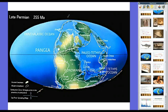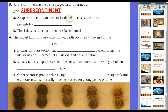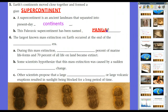By the end of the Permian Period, Earth's continents moved close together and formed a giant supercontinent. A supercontinent is an ancient landmass that later separated into the present-day continents. We know that the supercontinent formed by the end of the Permian Period was what we call Pangaea — and that's where Alfred Wegener and company based their research on continental drift.